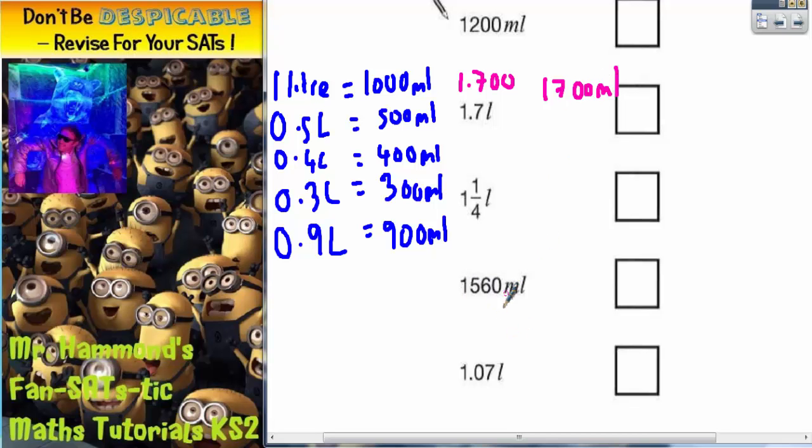This one here is 1,500 millilitres. So the 1 litre is 1,000. And the quarter of a litre, well, it's a quarter of a thousand. A quarter of a thousand is 250. So it's going to be 1,250 millilitres.